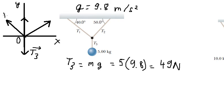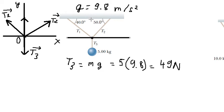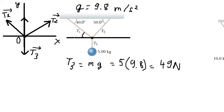We have vector T1 and vector T2. If we put a line here, we have two parallel lines. The angle here is 40 degrees, and similarly 50 degrees should be here. Now we can place the angles.